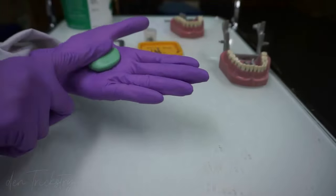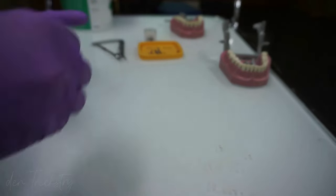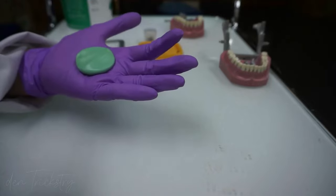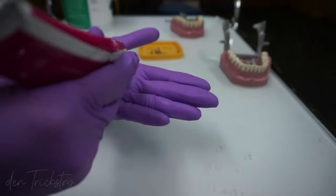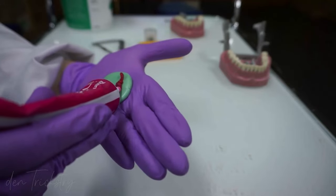The first step for temporization is making a putty index. For the putty index, I have used a condensation silicone impression material. You don't really need to use a more expensive addition silicone as this is only an index.